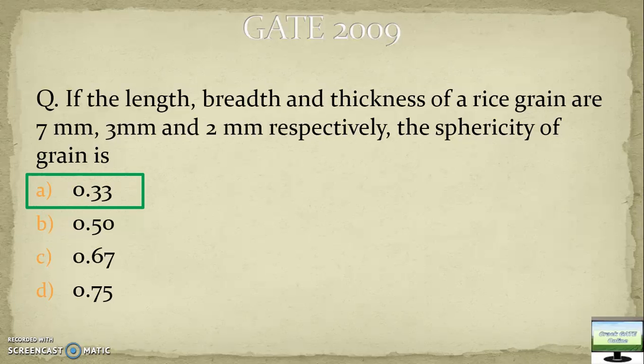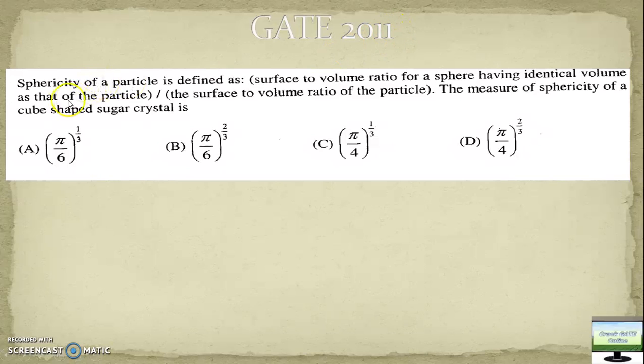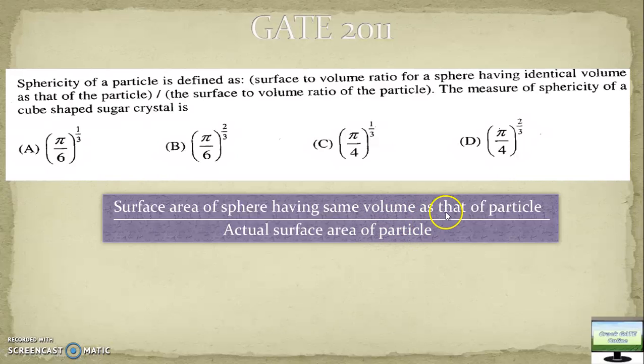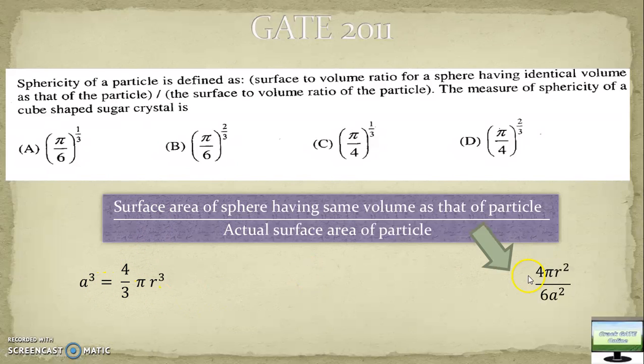Now we will move towards one complex question, that is Gate 2011. Sphericity has been defined in the question itself but they are asking for a cube shape. What is the formula of sphericity? Surface area of sphere having same volume as that of particle to the actual surface area. Here the particle is cube shape.